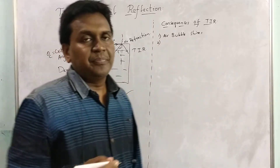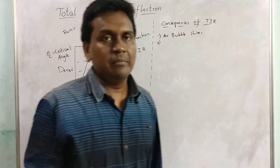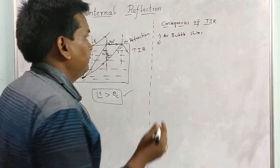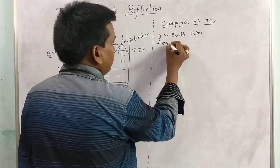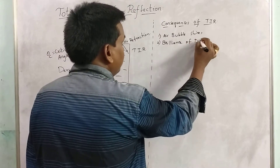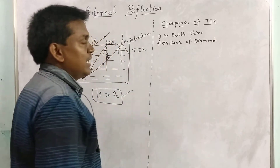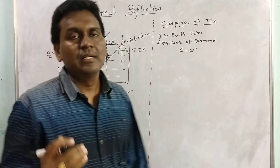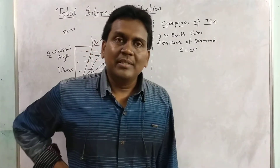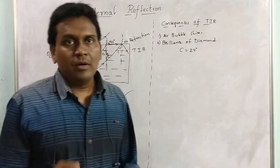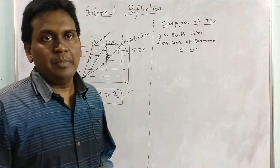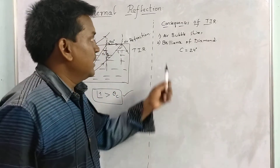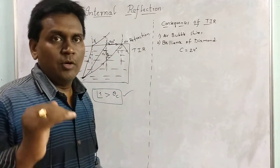Diamond also glitters — we call this the brilliance of diamond. When even a small amount of light falls on a diamond, it starts to glitter. The brilliance of diamond is due to total internal reflection. The critical angle of diamond is 24 degrees, which is a very small critical angle. Because of this low critical angle, a maximum number of rays participate in total internal reflection, giving diamond its brilliance.